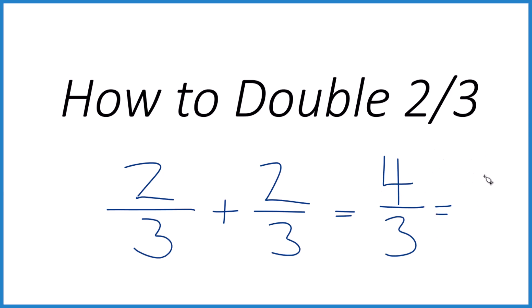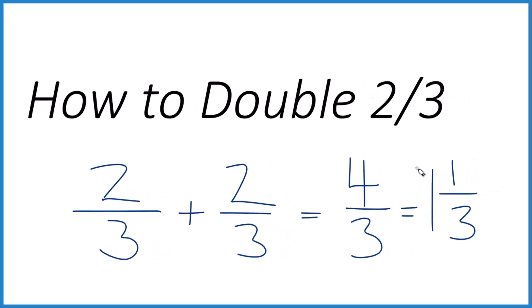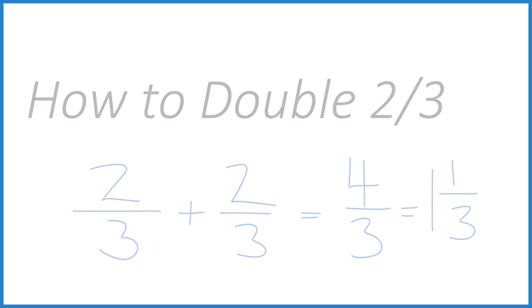That's it. This is Dr. B — doubling 2 thirds, you get 1 and 1 third. Thanks for watching.